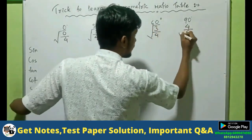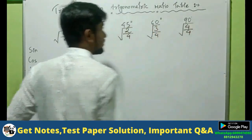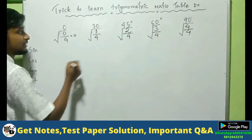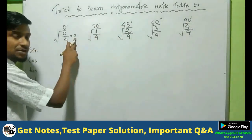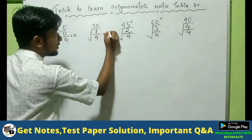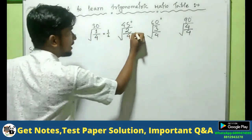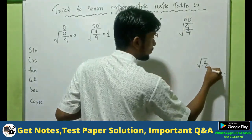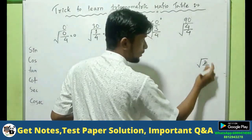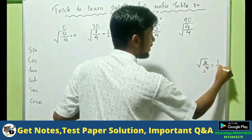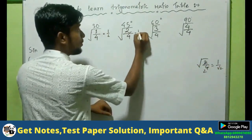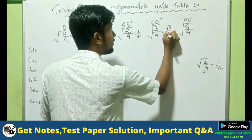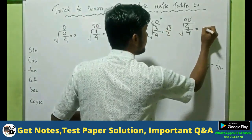Take the square root of these numbers. It will become 0, then 1 by 2, then 1 by root 2, then root 3 by 2, and here it will become 1.